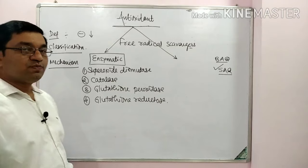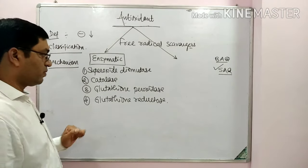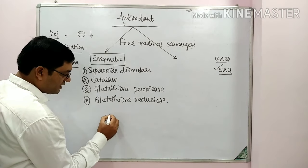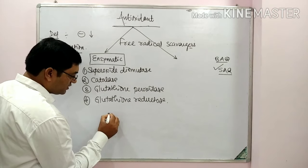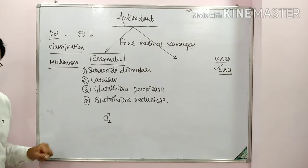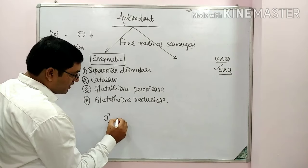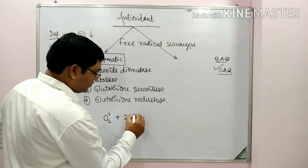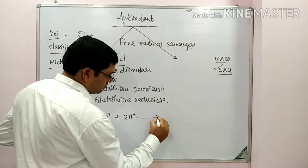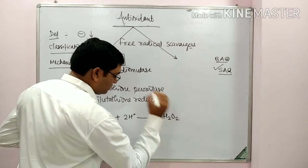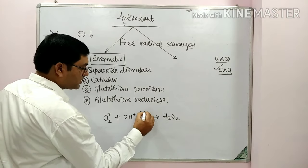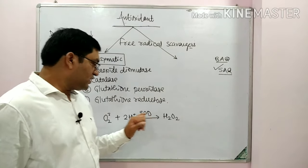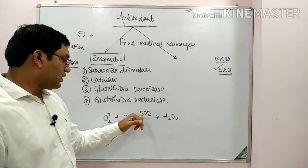Now we'll discuss the action of superoxide dismutase. Superoxide dismutase acts on the superoxide anion radical. This superoxide anion combines with H⁺ ions to form hydrogen peroxide — this reaction is catalyzed by superoxide dismutase.